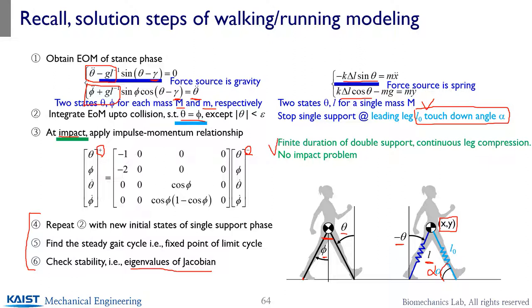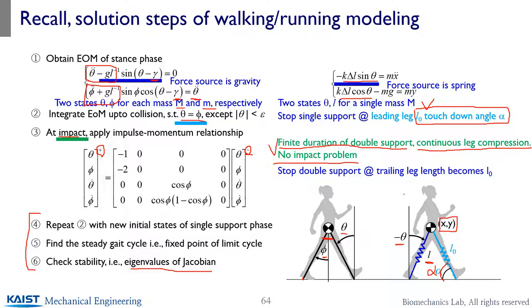For the spring leg, there is no energy dissipation. So as long as you know the forces, you can figure out the equations of motion. There is continuous leg compression — it's not an impact problem; you can solve the dynamics continuously. Since there are continuous dynamics, the double support phase is now solved over a finite duration, as opposed to the rigid leg where we assume instantaneous double support. The double support stops when the trailing leg reaches its natural length L0. These are the different conditions for the double-to-single support and collision problems.